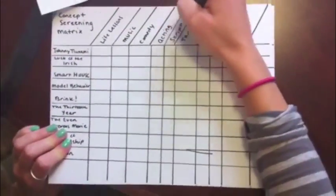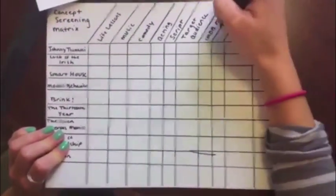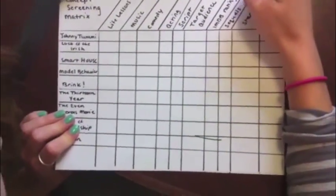After generating concepts and selecting criteria, we must choose a benchmark to rank all of the other concepts. This can be an existing technology, a concept easily understood by the group, or an average concept that neither overperforms nor underperforms.